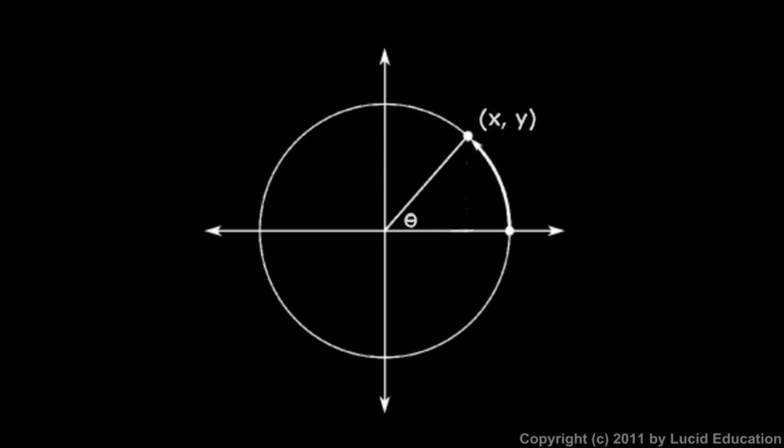Next we'll talk about a fairly simple but very important idea: that of a right triangle on the unit circle. Look at this first diagram. There's an angle theta. Remember we start here and we rotate in this direction and we've stopped here.